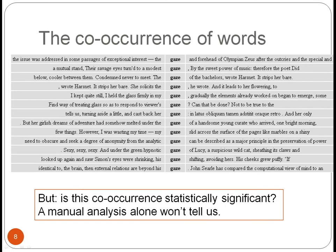If we go back to our concordance lines for 'gaze', we can look at which words occur repeatedly one to the left of the noun — repeatedly meaning at least twice. We can see that these would be the words 'the', 'my', and 'his'. This satisfies criteria one and two, namely regular or typical co-occurrence. However, this type of analysis can't tell us about collocation in a strict sense because we don't know if these relations are statistically significant, so criterion three — statistical significance — is missing. Analyzing concordances alone doesn't tell us about collocates in the sense of the statistical approach.